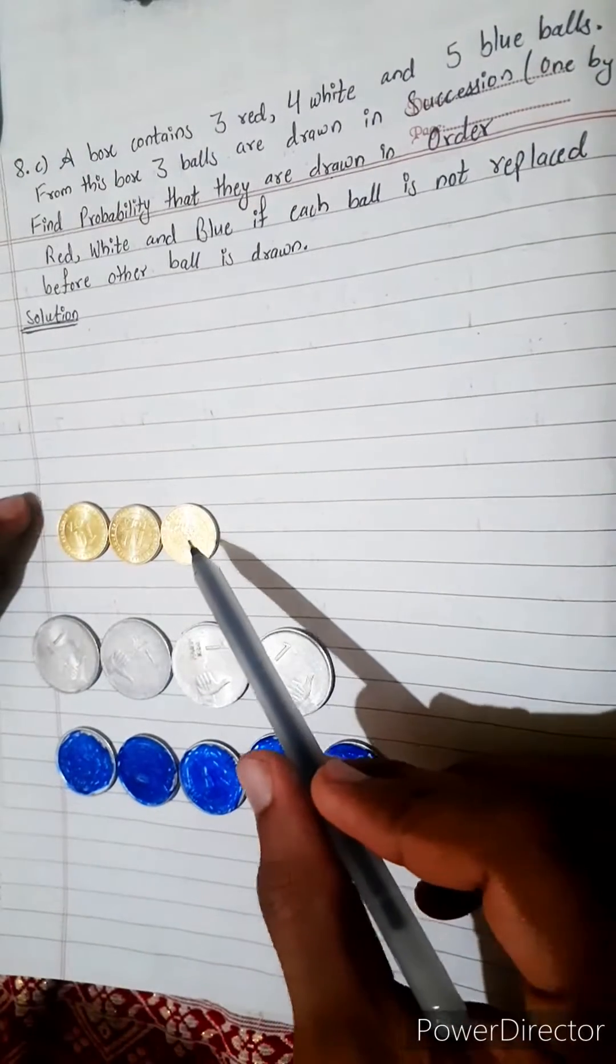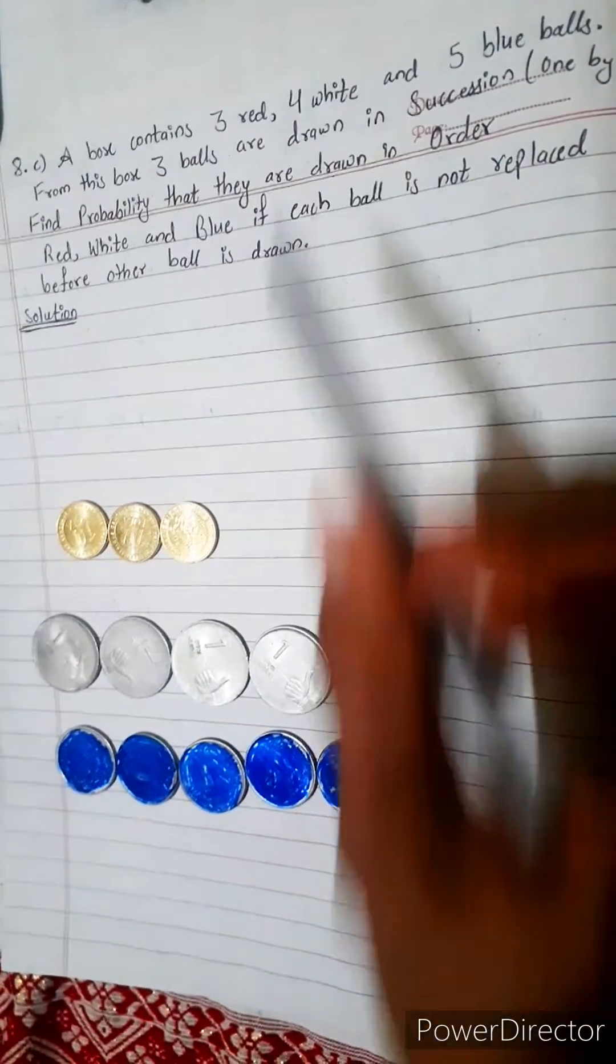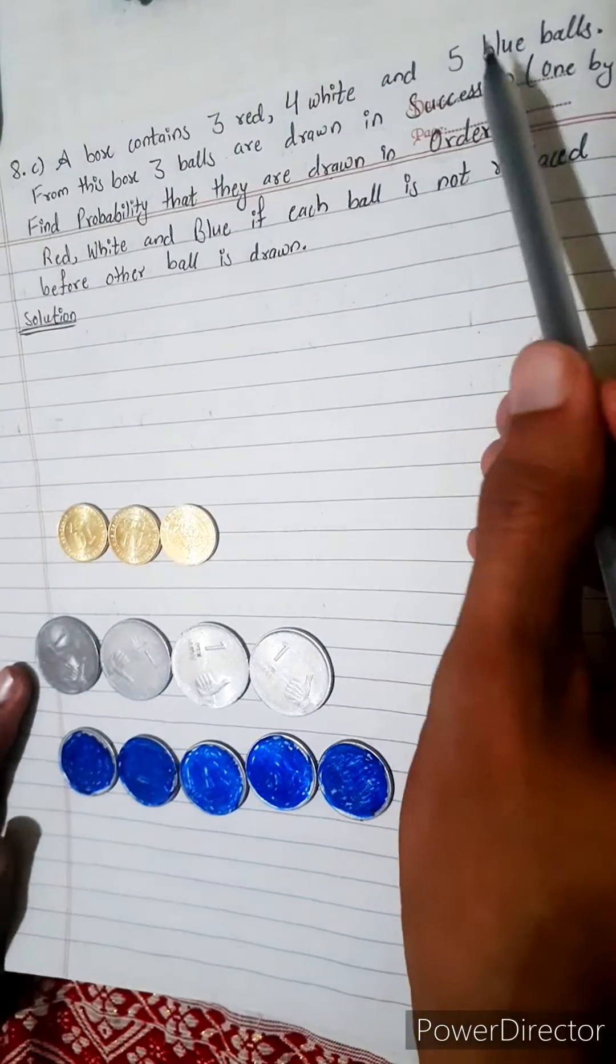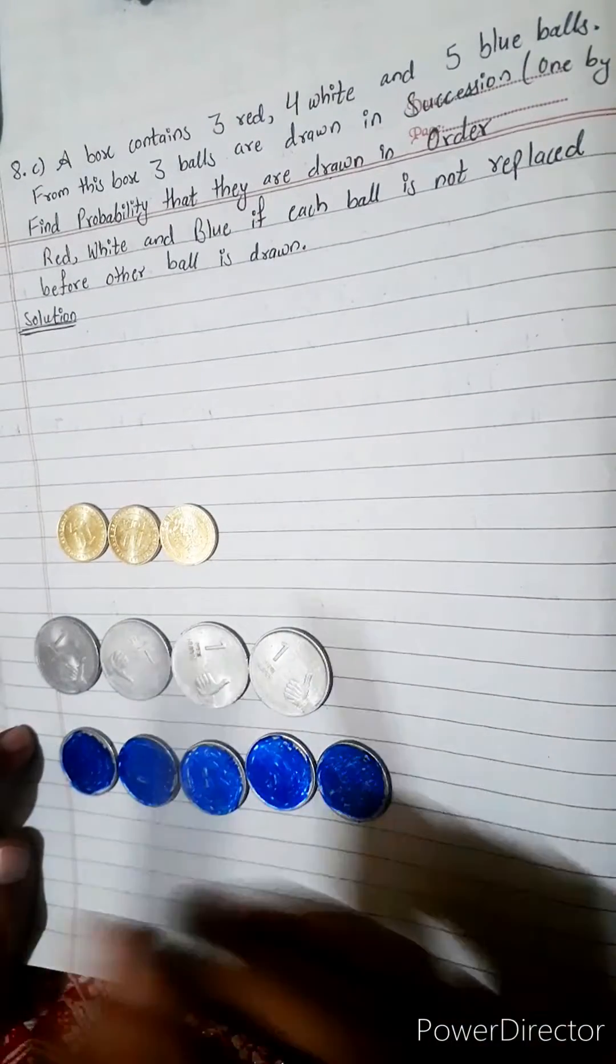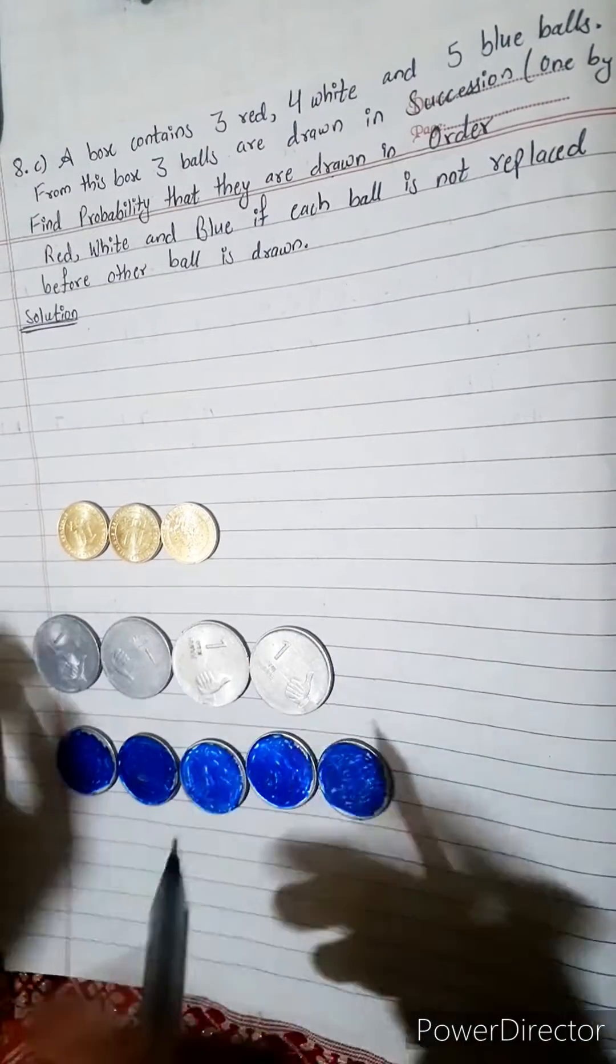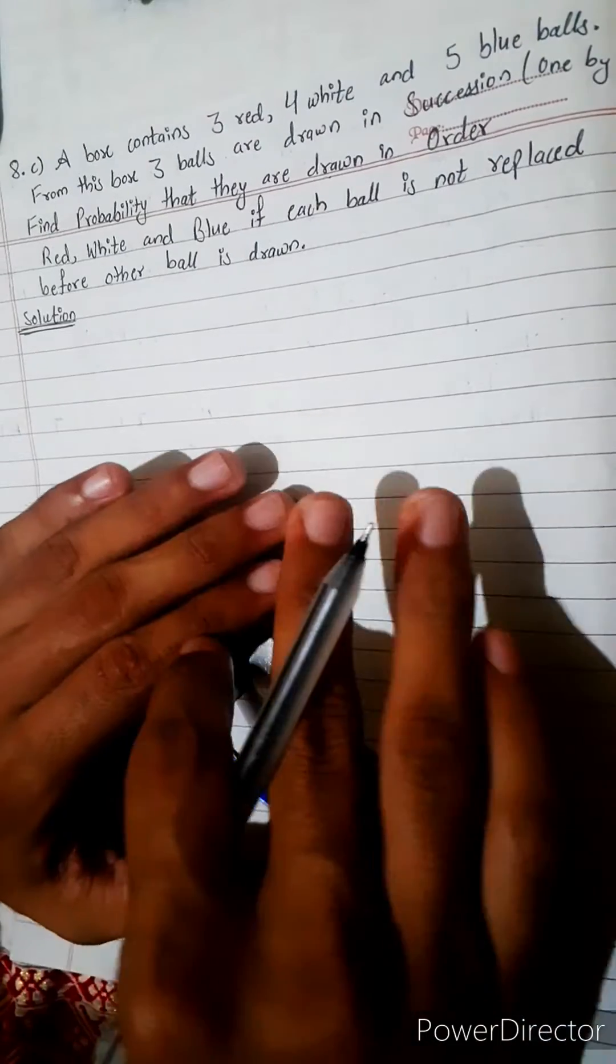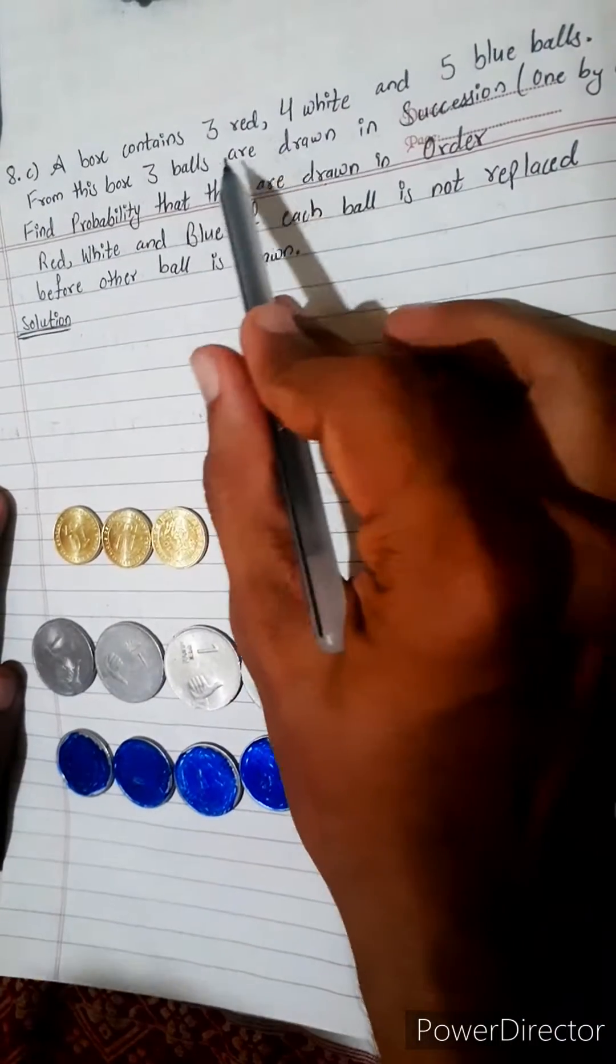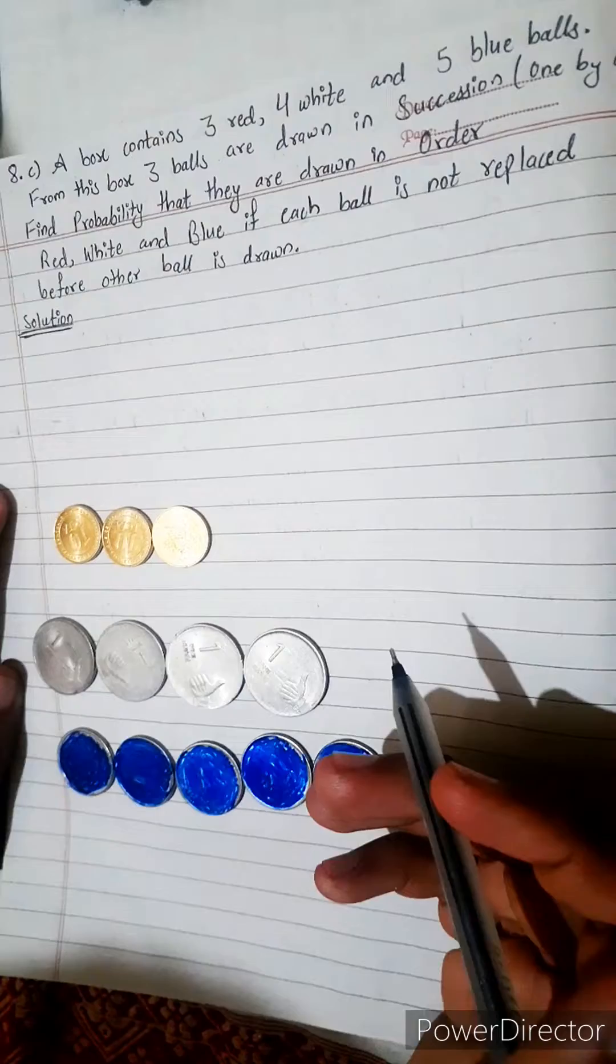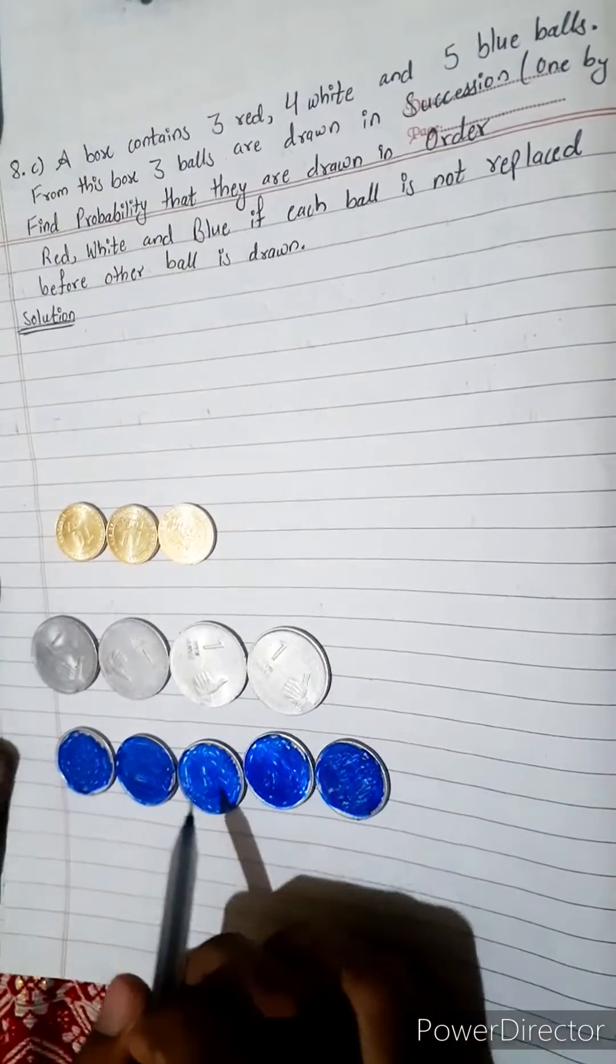A box contains 3 red balls, 4 white balls, and 5 blue balls. This box contains 3 reds, 4 whites, and 5 blues.